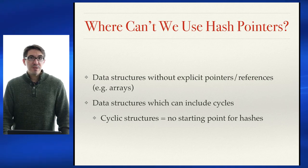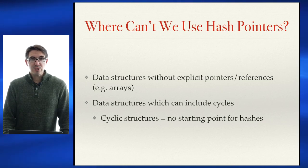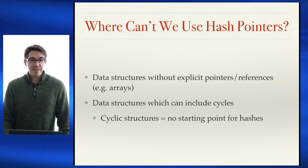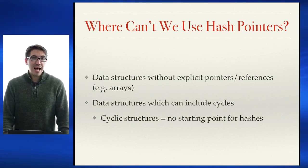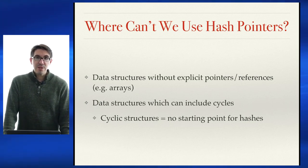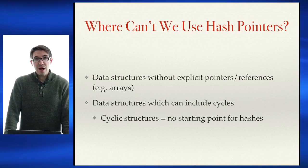Hash pointers seem like a really interesting, cool, and useful addition to our arsenal for data structures, and they are absolutely integral to building blockchain and related data structures. However, there are a few places where hash pointers cannot be used. First is in any data structure that doesn't have explicit pointers — we could protect these in other ways, but using a hash pointer, we can't create pointers to different elements in an array, since those are simply offsets from an initial point.